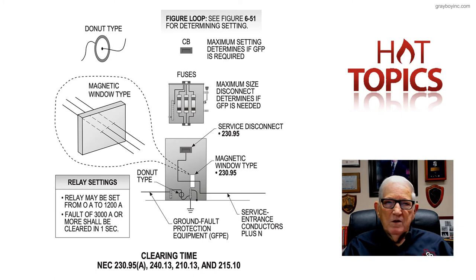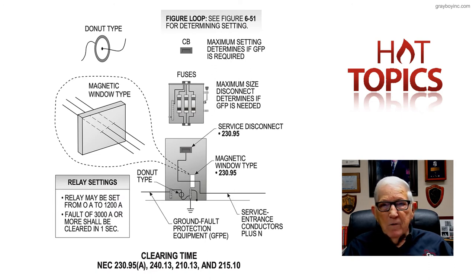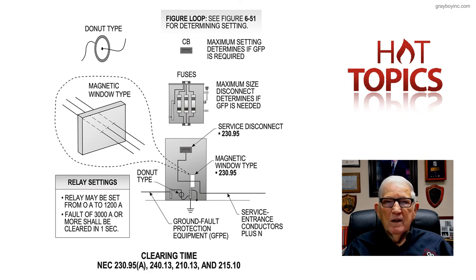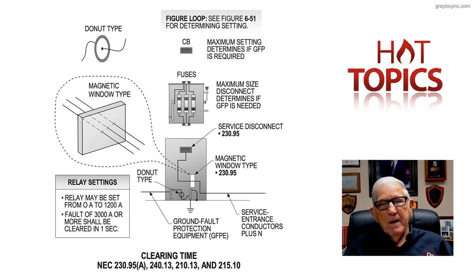Now, some authorities require a written procedure and testing done by a qualified person. Others require it to be done by an electrical engineer. Some don't even require it at all. What is the real deal of this requirement? If you read 230.95C very carefully on page 96 of your code book, you'll pick up the rules. You're supposed to have it tested by a qualified person, in accordance with the interpretation of this rule by the authority having jurisdiction, who will come in and make that interpretation. Testing is required to be done by a qualified person and presented to the authority having jurisdiction.